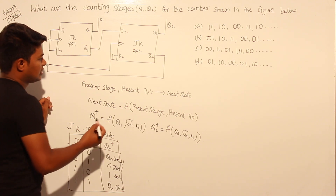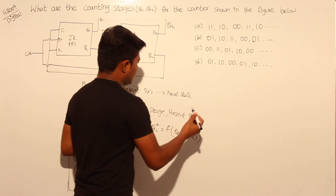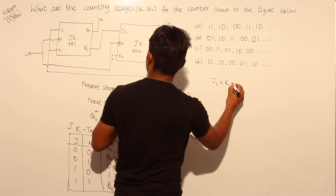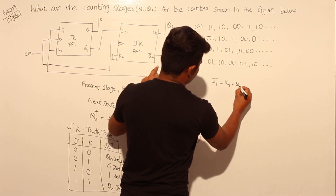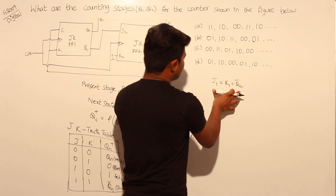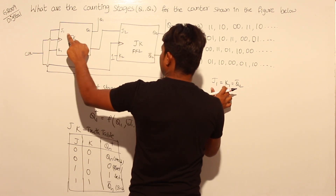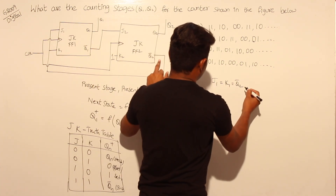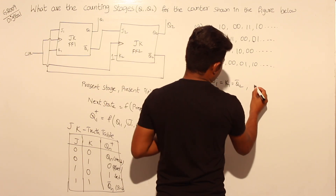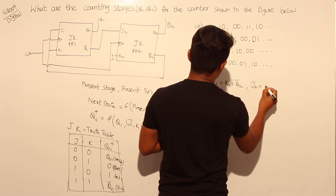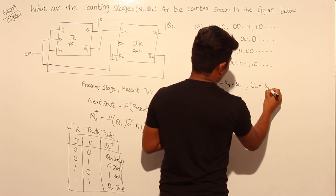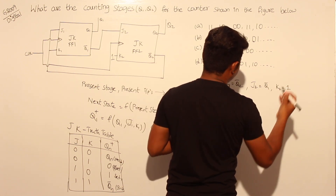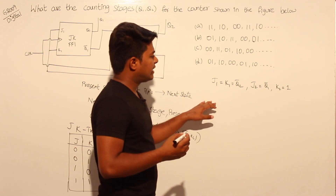From the diagram, J1 equals K1 equals Q2-bar — both inputs J1 and K1 are connected to Q2-bar. Similarly, J2 is connected to Q1-bar, and K2 is always 1.